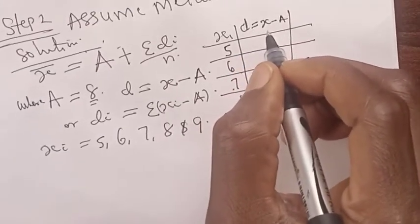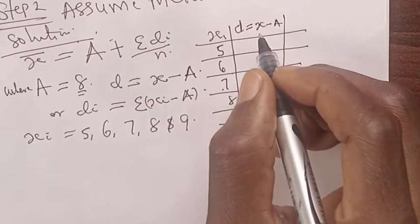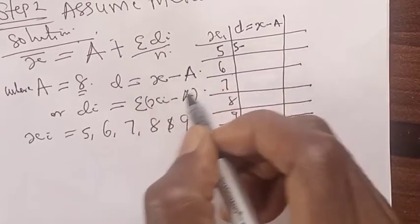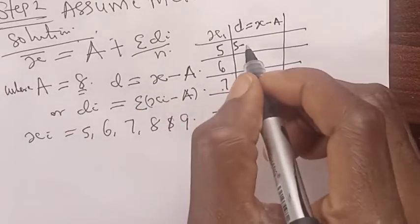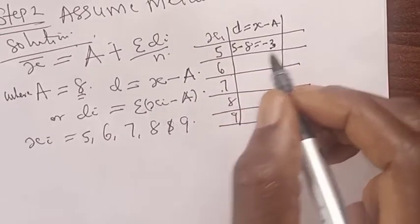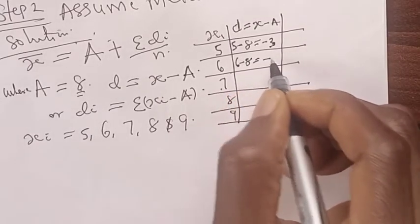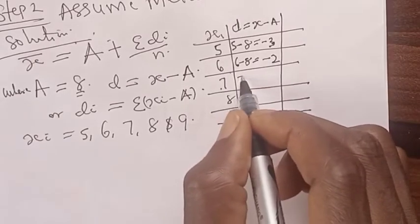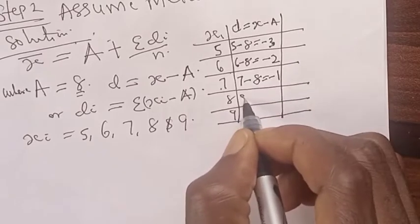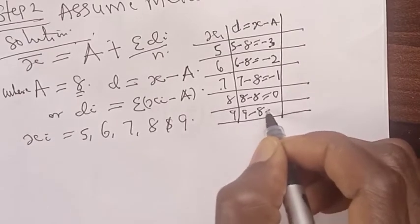Now, our di is giving us x minus A. Our x is 5 minus our A which is 8, which equals minus 3. Then for the second row, we have 6 minus A, which is minus 2. The third is 7 minus 8, which is minus 1. Then we have 8 minus 8, which is equal to 0. Then we have 9 minus 8, which is equal to 1.